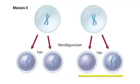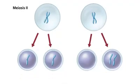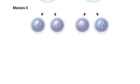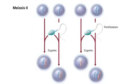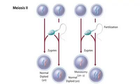One egg lacks a chromosome while the other egg has an extra chromosome. When a haploid sperm cell fertilizes a haploid egg, a normal diploid results. If the sperm cell fertilizes the egg that lacks a chromosome, then monosomy results. If the sperm cell fertilizes the egg with an extra chromosome, then trisomy results.